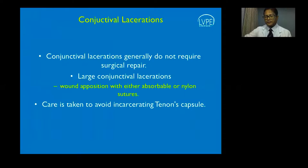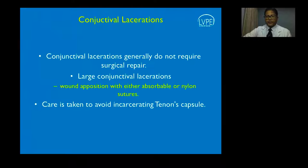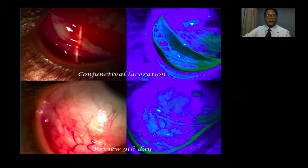Conjunctival lacerations normally do not require surgical repair unless there is a large avulsed plaque or distortion of the anatomy of the caruncle or the semilunar fold. When repairing these lacerations, it's important not to touch or disturb the Tenon's capsule, as that may lead to scarring. This was a child who sustained blunt trauma from a torn knob; the fluorescein stain showed a wide area of epithelial defect that remarkably healed with conservative management alone.